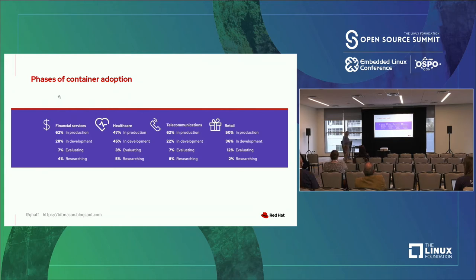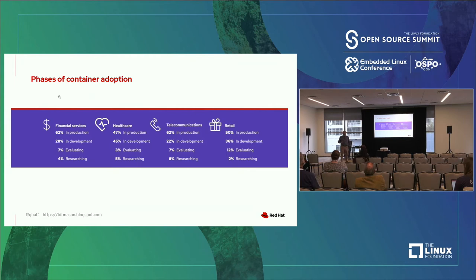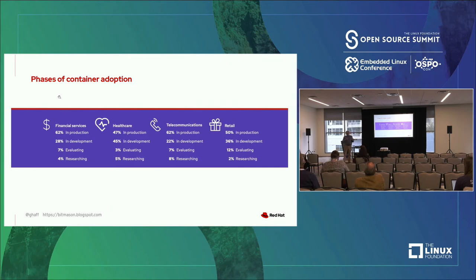Healthcare is somewhere in the middle of container adoption, down near the bottom. The narrative might be that healthcare has had a lot on its mind as an industry, and some hospital IT projects haven't necessarily been going full speed. Retail is probably a mix — the Walmarts and Amazons of the world have quite a bit of technology innovation, but there's a large tail of smaller retailers leveraging things like credit card technologies who are probably not at the leading edge.